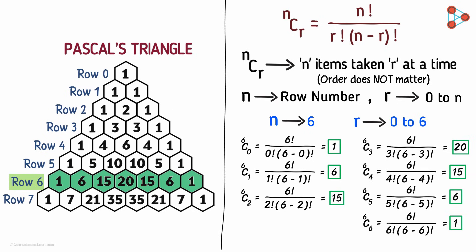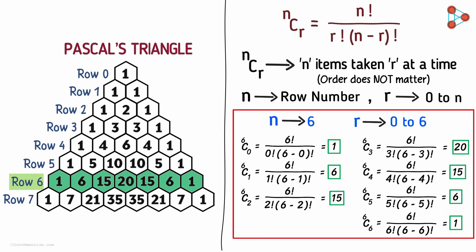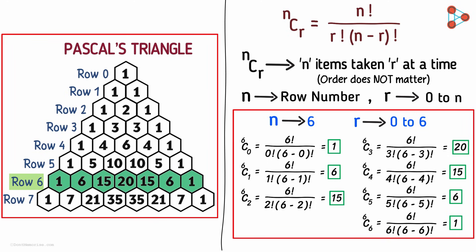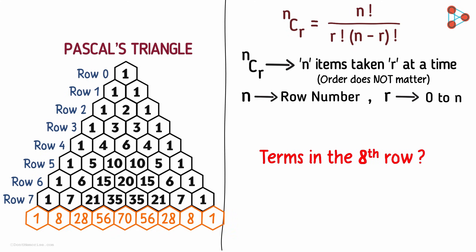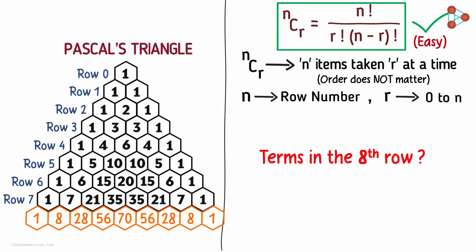But why do we use combinations when we can just draw Pascal's triangle and get the values? Consider finding the terms in the eighth row — would we draw Pascal's triangle all the way up to the eighth row, or simply use combinations? We would use combinations, as it makes our work much simpler.